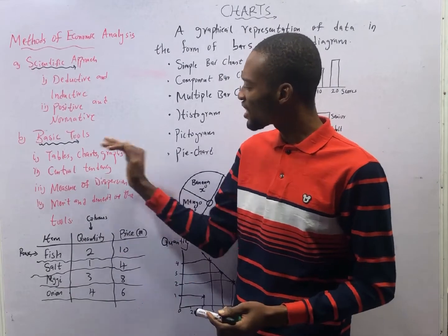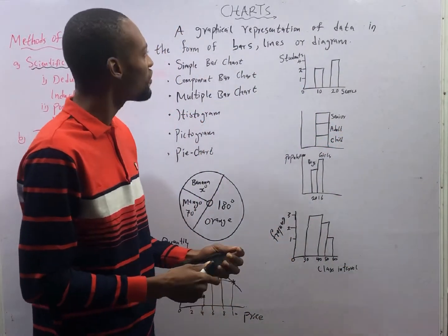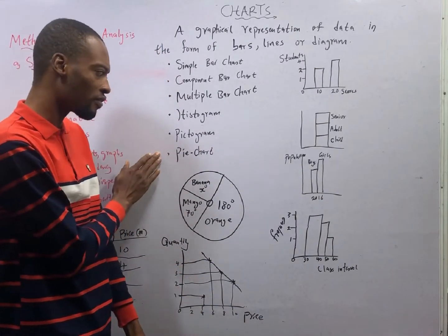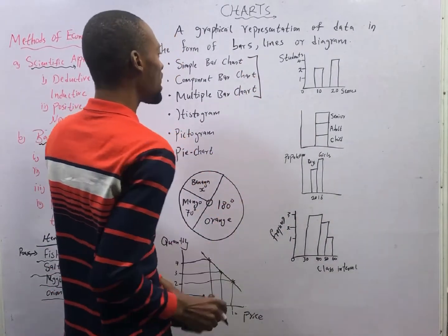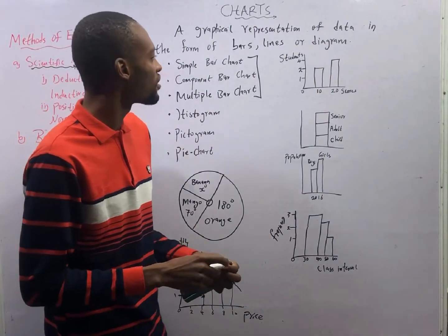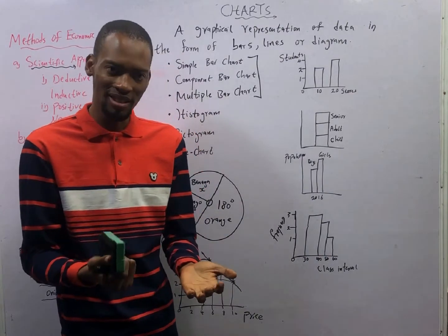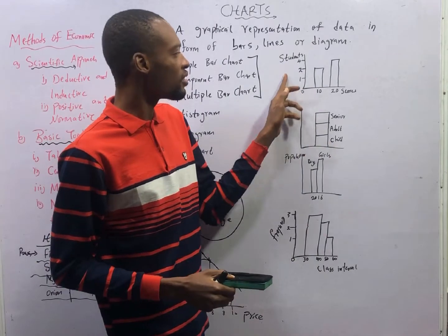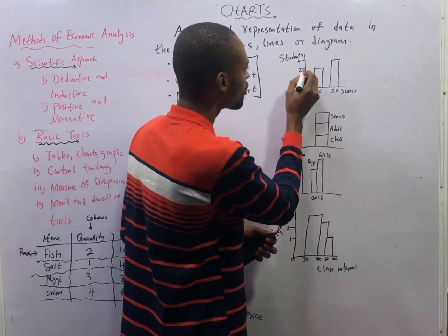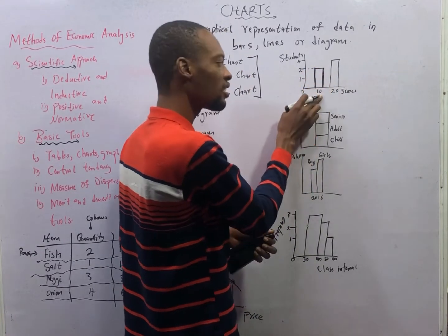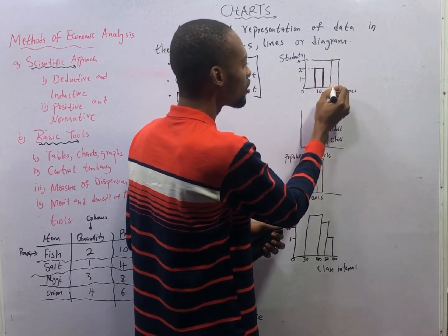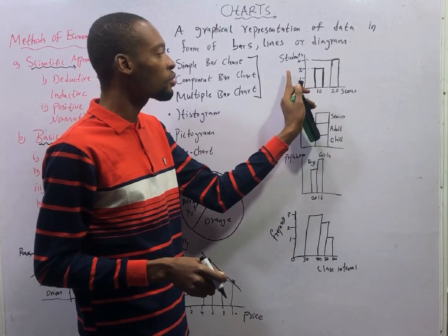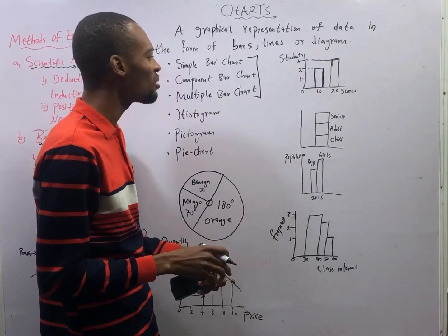Then, what are charts? A chart is a graphical representation of data in the form of bars, lines, or diagrams. The types of charts we have include bar charts, which are divided into simple bar charts, component bar charts, and multiple bar charts. For example, in a simple bar chart showing students' scores, you can see that two students had 10 scores and four students had 20 scores — that is how you interpret bar charts.